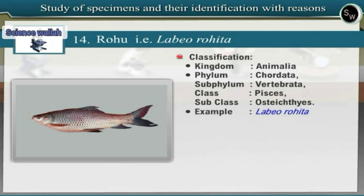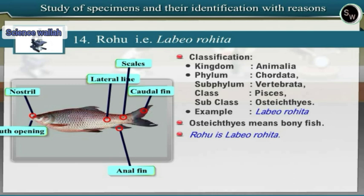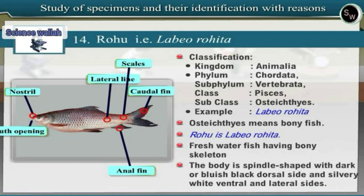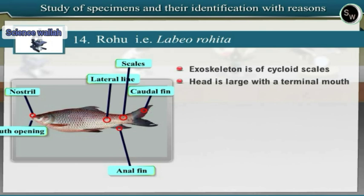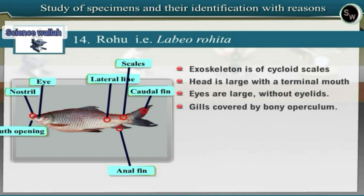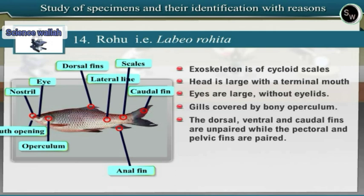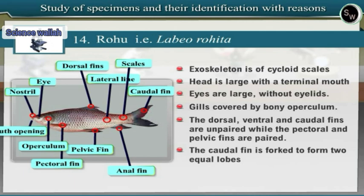Rohu is a freshwater fish having a bony skeleton. The body is spindle-shaped with a dark or bluish-black dorsal side and silvery-white ventral and lateral sides. The exoskeleton is of cycloid scales. The head is large with a terminal mouth. Eyes are large without eyelids. Gills are covered by bony operculum. The dorsal, ventral and caudal fins are unpaired, while the pectoral and pelvic fins are paired. The caudal fin is forked to form two equal lobes, so the tail is called a homocercal tail.